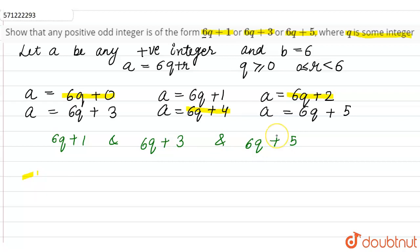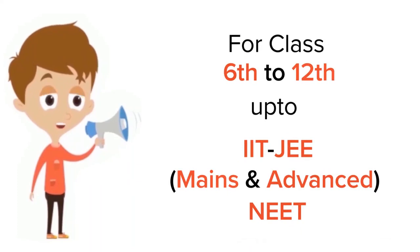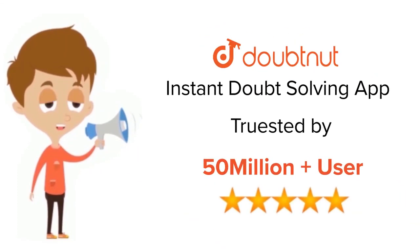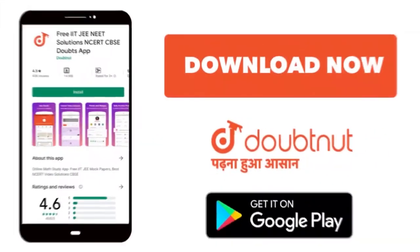These three numbers are the positive odd integers in the form 6q+1, 6q+3, and 6q+5, where q is some integer. For class 6 to 12, IIT-JEE and NEET level, trusted by more than 5 crore students, download Doubtnet app today.